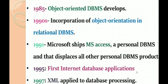In the 1990s, there was an incorporation of object orientation in relational DBMS. DBMS evolved into RDBMS, which stands for Relational Database Management System. In the 1990s, the DBMS adopted the object-oriented concept, becoming RDBMS — Relational Database Management System.